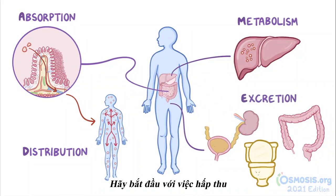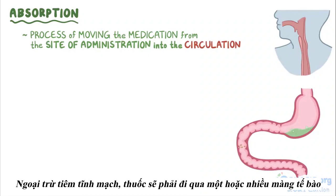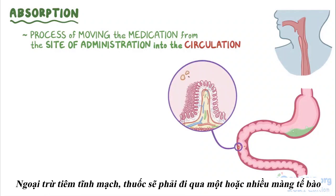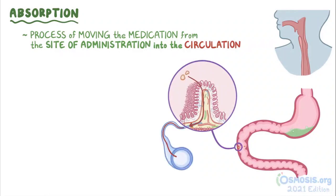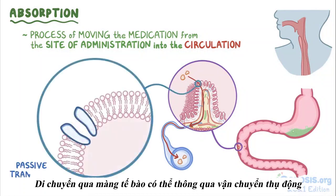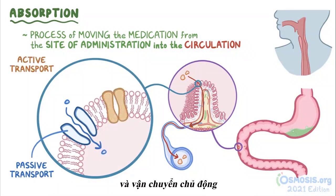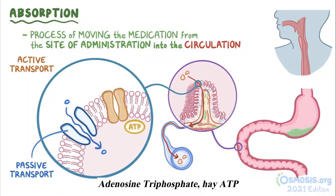Absorption is the process of moving the medication from the site of administration into the circulation. With the exception of intravenous administration, a medication will need to cross one or more cell membranes before it reaches the circulation. Movement across the cell membrane can occur via passive transport, which requires no energy, and active transport, which does require energy in the form of adenosine triphosphate, or ATP.